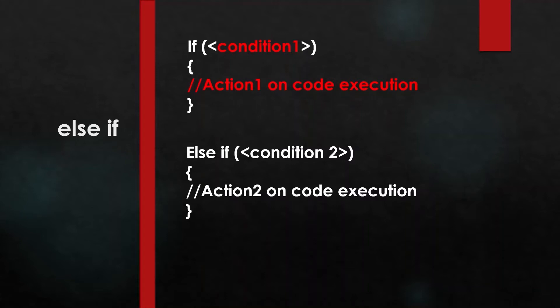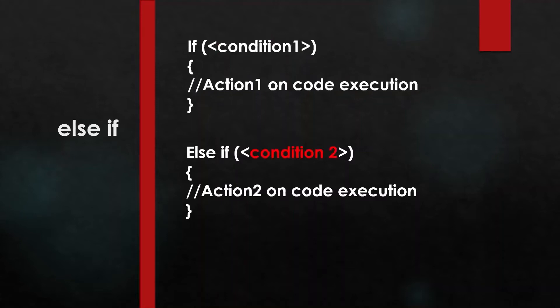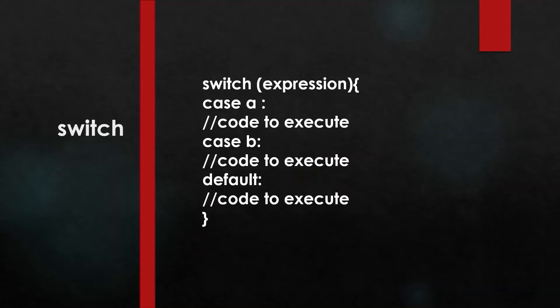If the condition is returning false, it will go to the next line of code. We have an else if condition: if condition two is true, then action two code will be executed. Whatever code is written within the else if curly brackets will be executed.